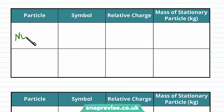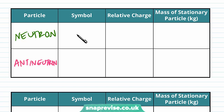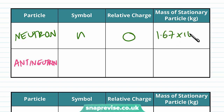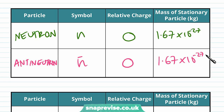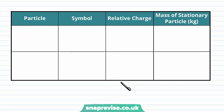Another particle we've encountered is the neutron, and the neutron has an antiparticle called the antineutron. The neutron has symbol n, relative charge 0, and mass 1.67 × 10⁻²⁷ kg. The antineutron has symbol n̄; since the neutron has zero charge, the antineutron also has zero charge; and its mass is 1.67 × 10⁻²⁷ kg.